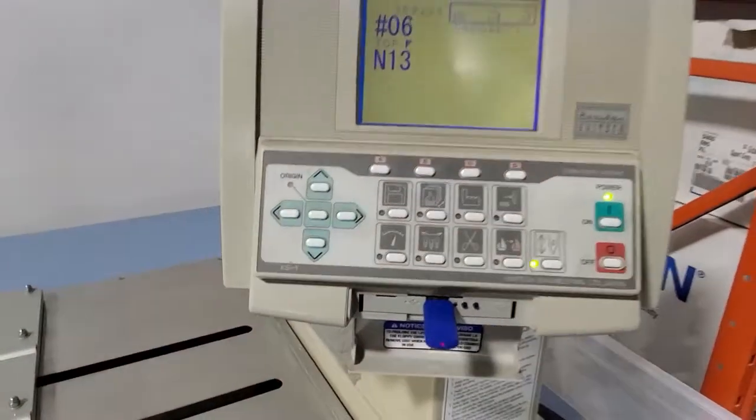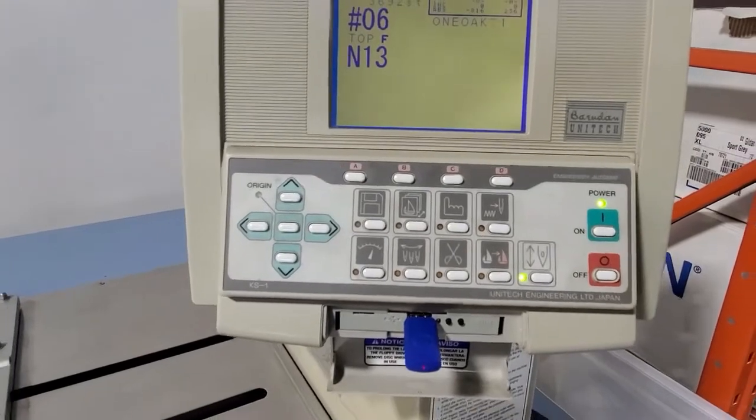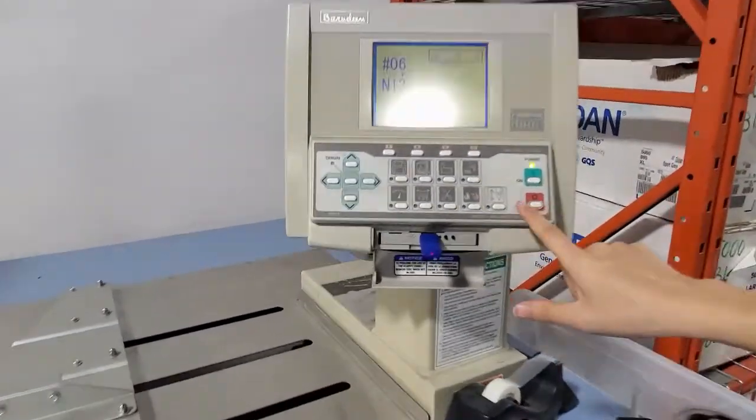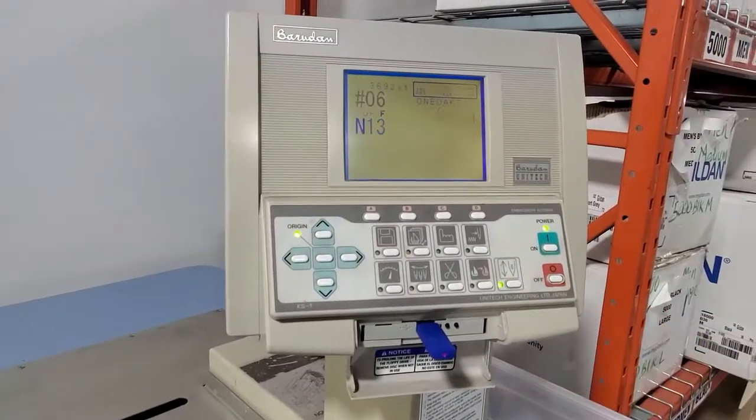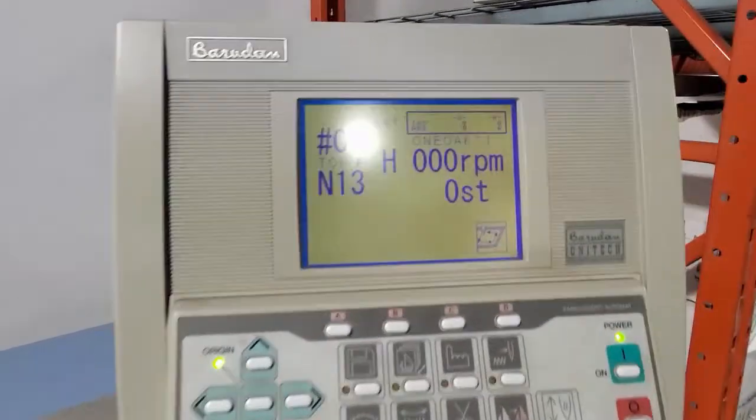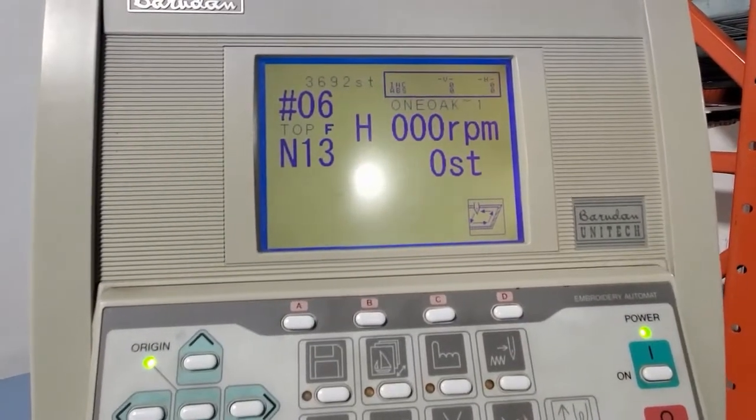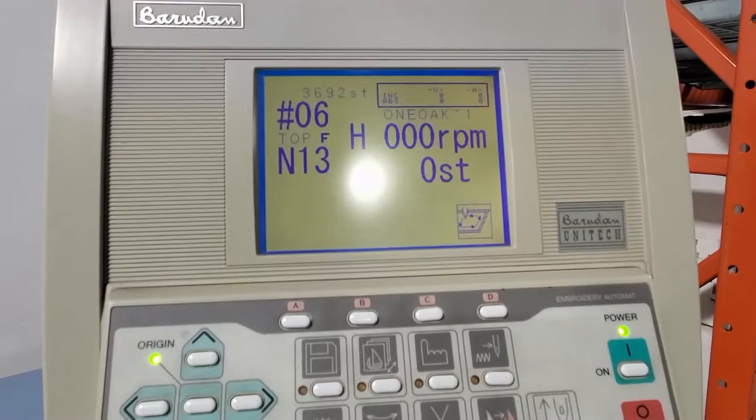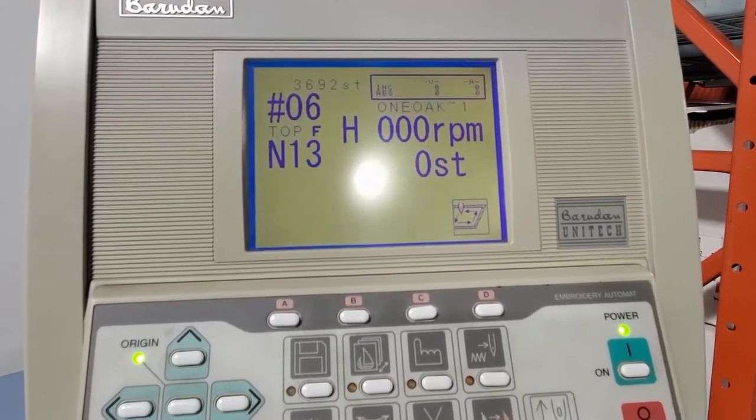To start stitching, make sure this is not blinking. Press this button, and then this whole screen appears. That means we're in stitch mode with needle number 13 and zero stitches.